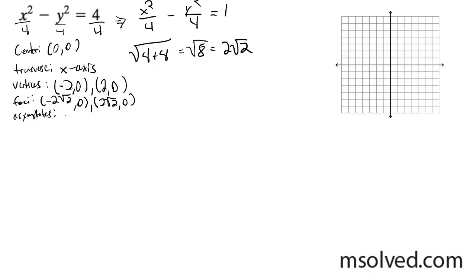And the asymptotes are going to be rise over run, so it's just going to be plus or minus x. Alright, so now I'll draw out a graph here.